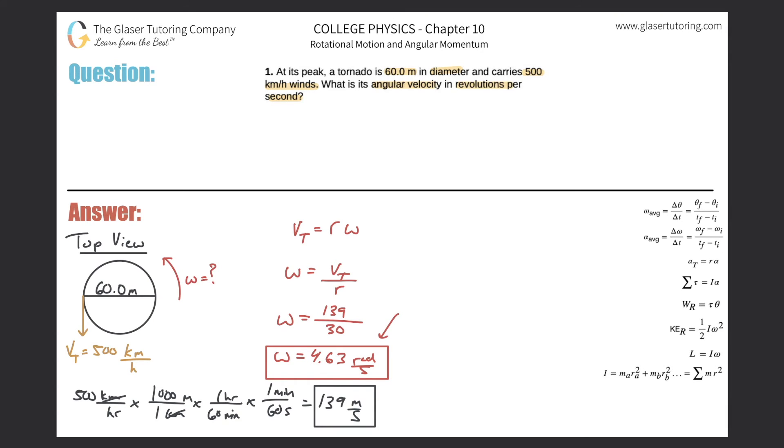In any case, so now what we need to do is just basically convert this value into revolutions per second. So remember the conversion: 2π radians is equal to one revolution. And therefore I can take my 4.63 radians per second, multiply it then by, for every 2π radians there is one revolution.